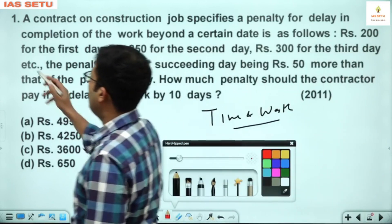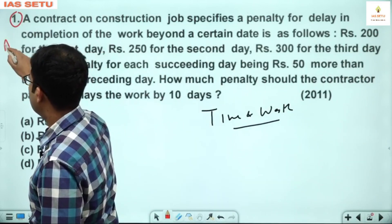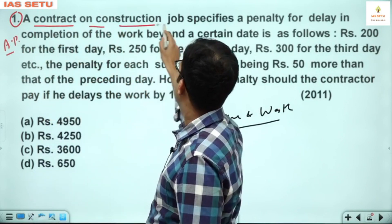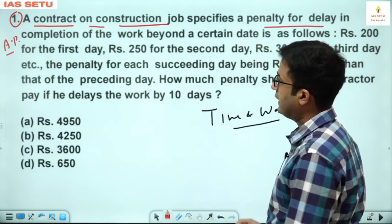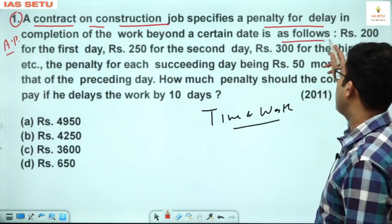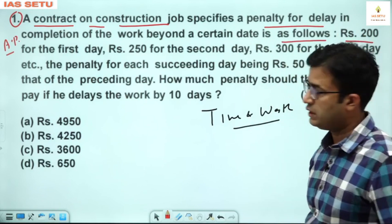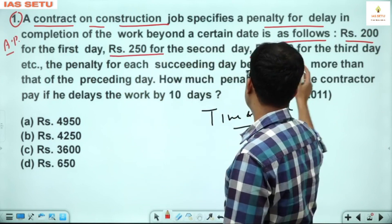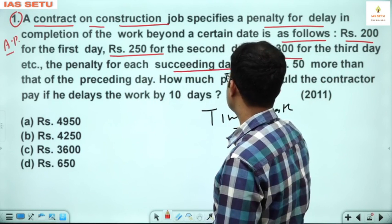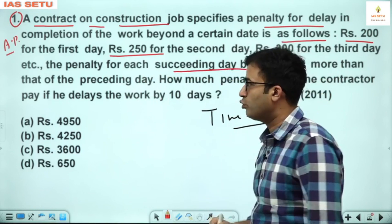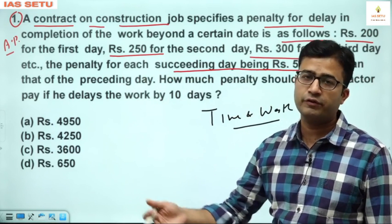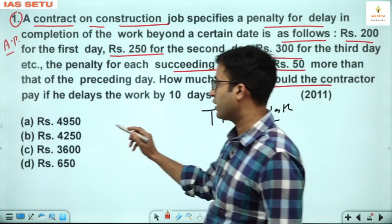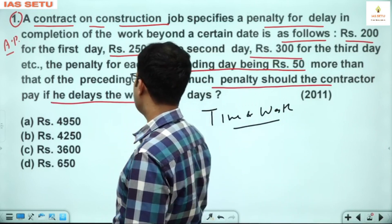First question — although this is an arithmetic progression question. A contractor on construction jobs specifies a penalty for delay in completion of the work beyond a certain day as follows: rupees 200 for the first day, second day rupees 250, third day rupees 300, and the penalty for each succeeding day being rupees 50 more than that of the preceding day. How much penalty should the contractor pay if he delays the work for 10 days?